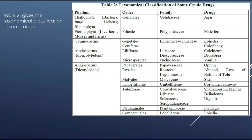In the order Tubiflorae, the family present is convolvulaceae — in that, shankhpushpi and mentha drugs are present. In the family labiatae, mentha is present. In the family solanaceae, belladonna is present. In the family scrophulariaceae, digitalis is present. In the order Plantaginales, family plantaginaceae — drug present is plantago. In the order Campanulales, family lobeliaceae is present, and the drug present is lobelia.